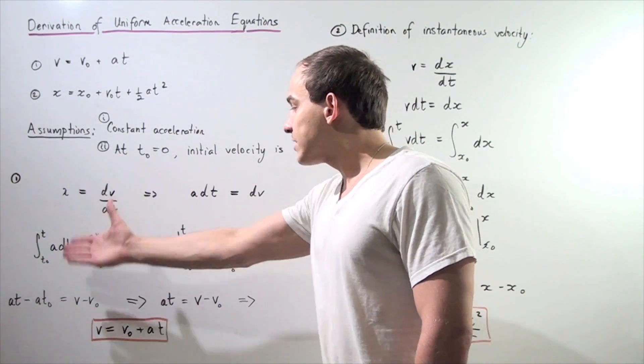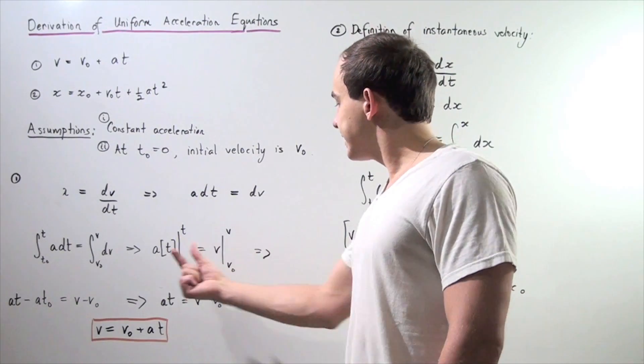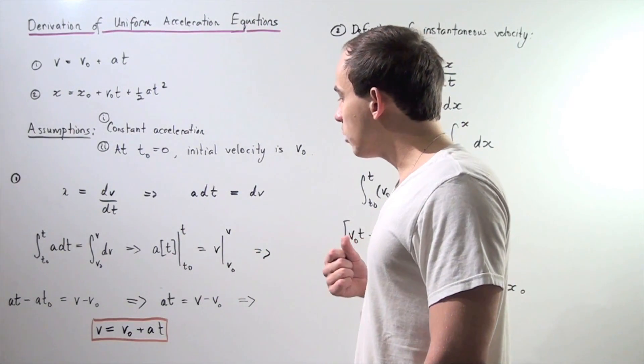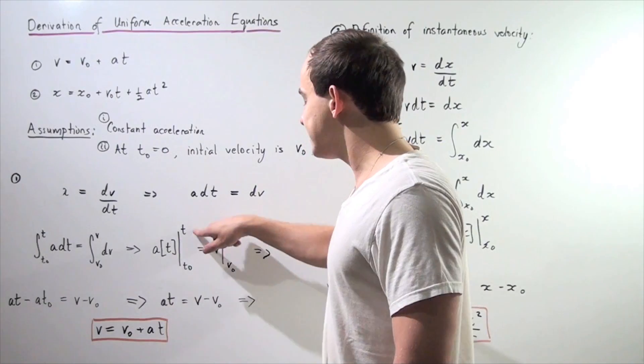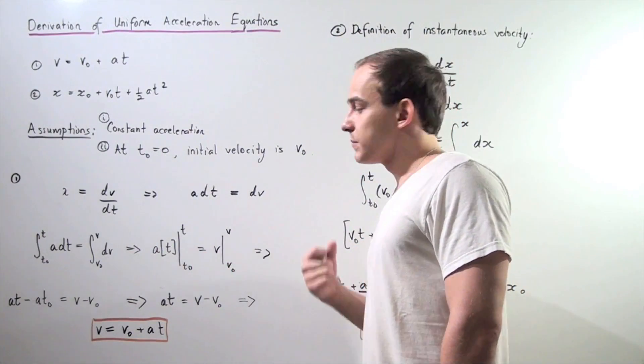Now, let's actually evaluate the integral and we get the following formula. A times t from t-naught to t equals v from v-naught to v.